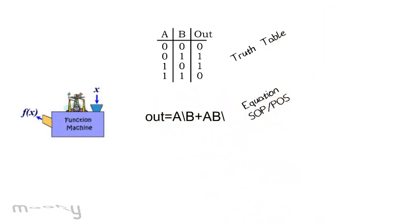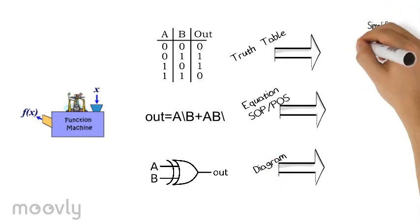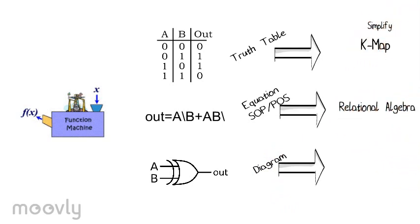Equations can be sum of products or product of sums. The third approach is diagrams. We can use diagrams to show the relations. To simplify tables, use K-maps. To simplify equations, use Boolean algebra. Diagrams have no simplification method.